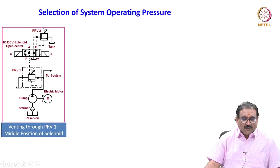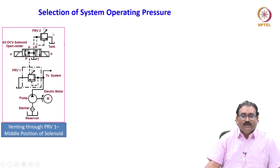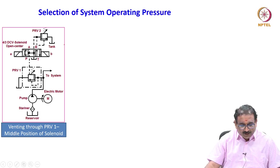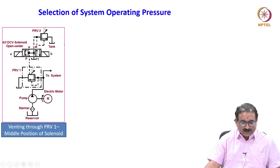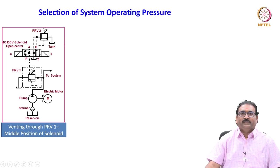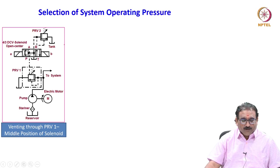When solenoid A is actuated, it will go to one position. When solenoid B is actuated, it will shift to the parallel configuration — and this is PRV 2. Now, in the null position — meaning no current in the solenoids — both are de-energized. The valve is in the middle position, and the pump line is connected to the middle, which connects to the tank. Meaning the pressure is only tank pressure — approximately 1 bar. When there is no pressure in the system, the pump flow will be sent to the tank.